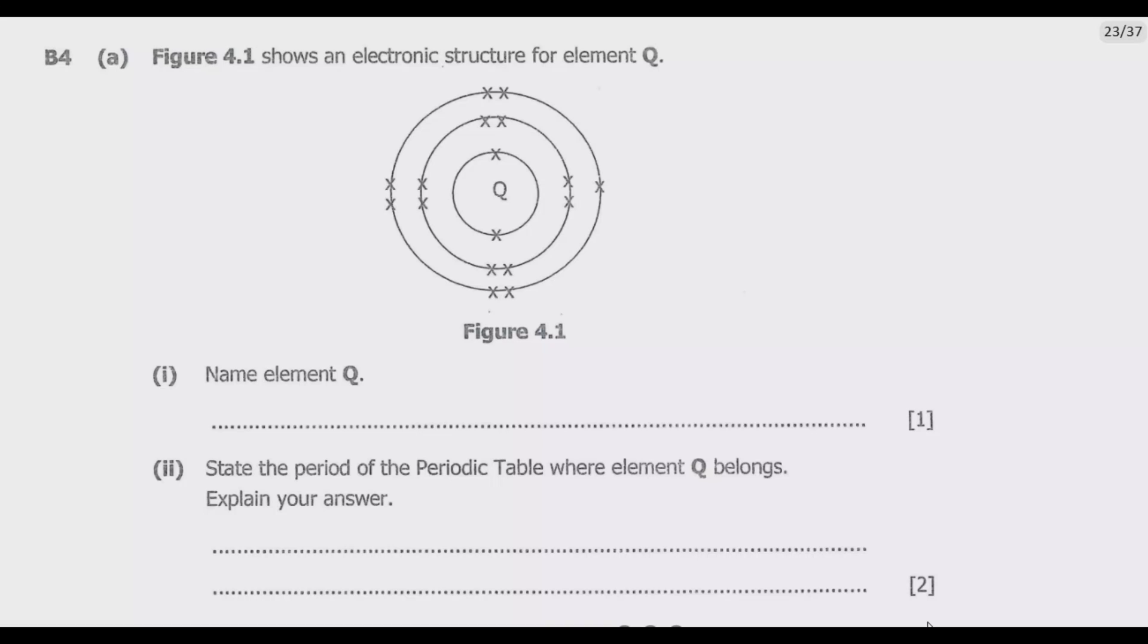Welcome viewers to the eighth episode in a series focused on the 2023 GCE science paper 2, which is chemistry. In the previous episode, we covered section A through question B3. If you haven't seen those episodes, please check out our YouTube channel. If you're new to this channel, please consider hitting the subscribe button so that each time I upload a new video, you get the notification. And if you find this video helpful, please consider liking.